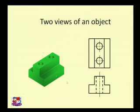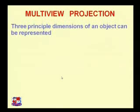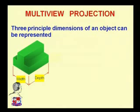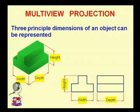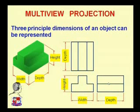With front view and top view we can express all components — like two diameters, a hole inside this face, and a T-shaped object in front view. Now, what is multi-view projection? An object has mainly three dimensions: width, depth, and height. Width and height are shown in front view; depth can be seen in side view as well as in top view. For this object, three views are sufficient: front view, top view, and side view.